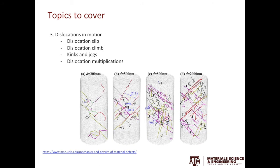In the third part, we'll discuss dislocations in motion, which includes dislocation slip, dislocation climb, kinks and jogs, as well as dislocation multiplications. The example here is taken from the UCLA materials science website and depicts the dislocation activities when you compress nano-pillars. Dislocation activities are modeled using dislocation dynamics simulations.